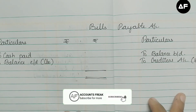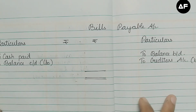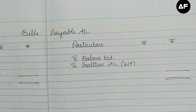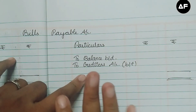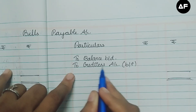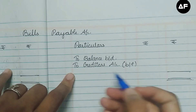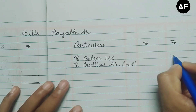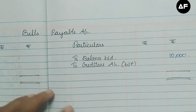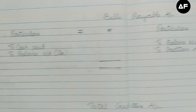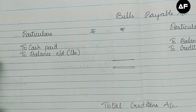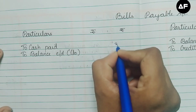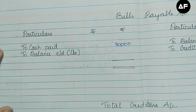I've written down the bills payable account format. Starting with the credit side: the opening balance of bills payable is 10,000, and the balancing figure will be transferred to the creditors account — I've written it as 'creditors account' to show the transfer. The debit side records: payment against bills payable of rupees 30,000.